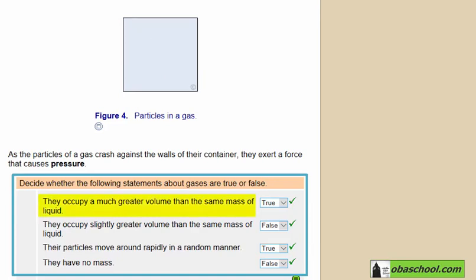Particles of a gas occupy a much greater volume than the same mass of the liquid. And, this is because they move around rapidly and in a random manner. But, of course, these are particles and thus they have a mass.